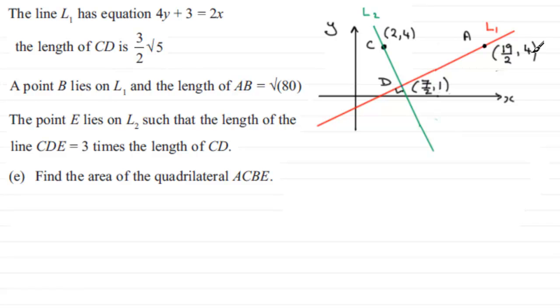We also found out that the length of CD in the previous part was 3 over 2 root 5. Now we're told that a point B lies on the line L₁ and the length of AB is the square root of 80.